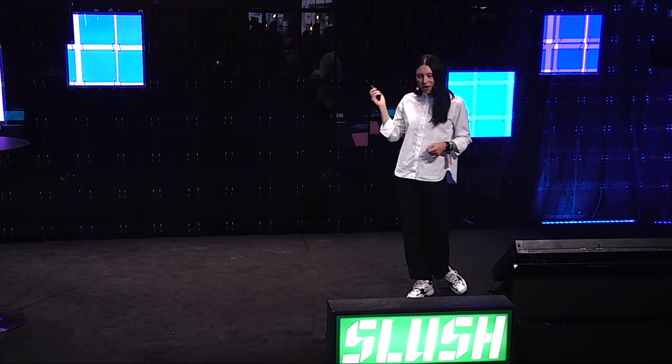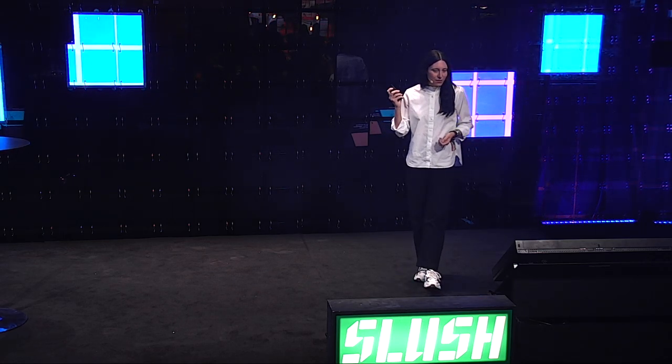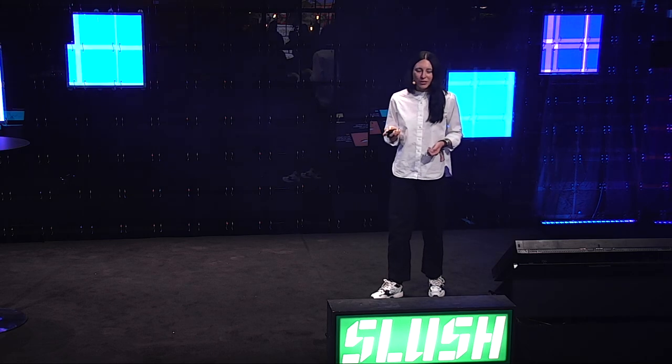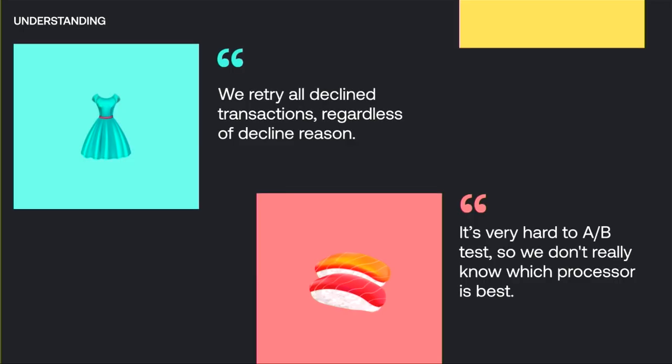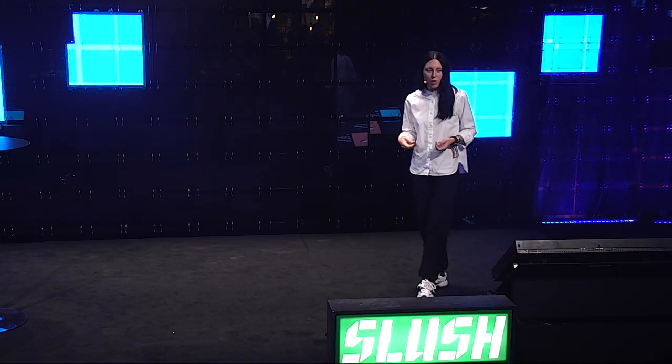One merchant in the fashion industry told us that they were retrying old declined transactions regardless of the decline reason. This is really expensive, but you also don't want to retry transactions if the decline reason is that the card was stolen. Another merchant in the food delivery vertical said it was very hard for them to A/B test, so they didn't really know which PSP or card processor was the best. A/B testing was a topic that many, many merchants were mentioning they were struggling with.